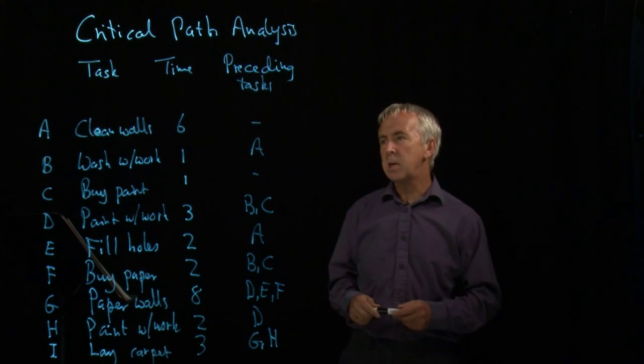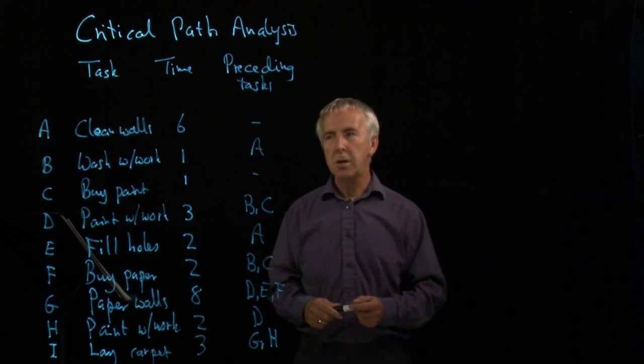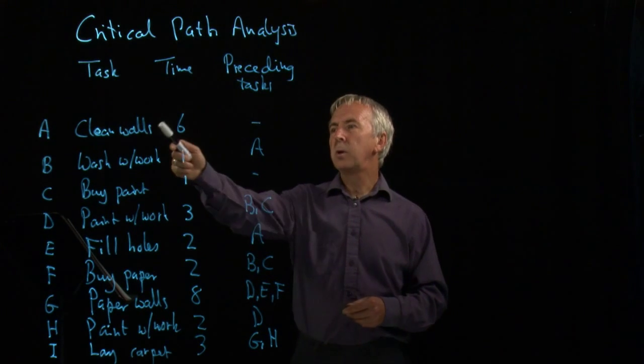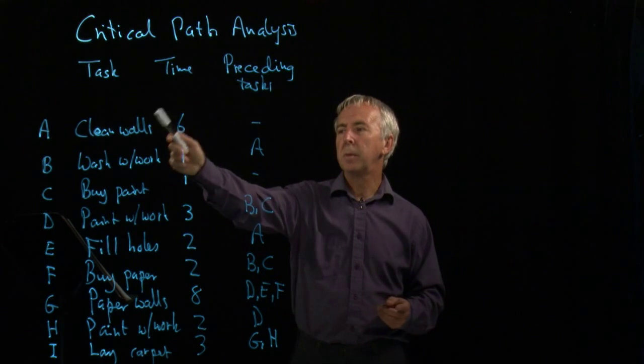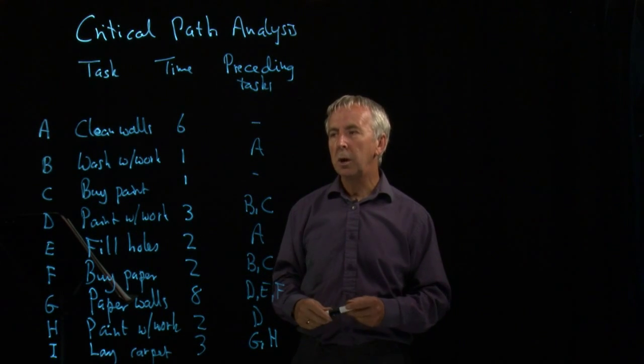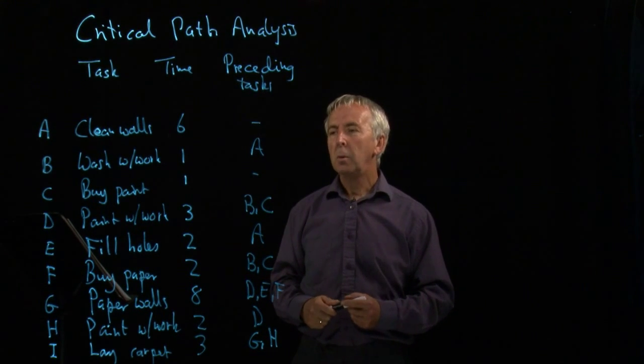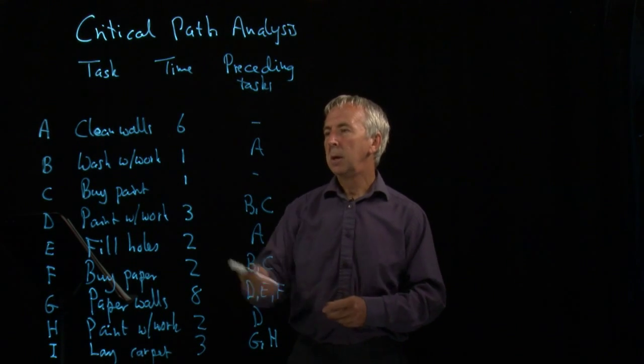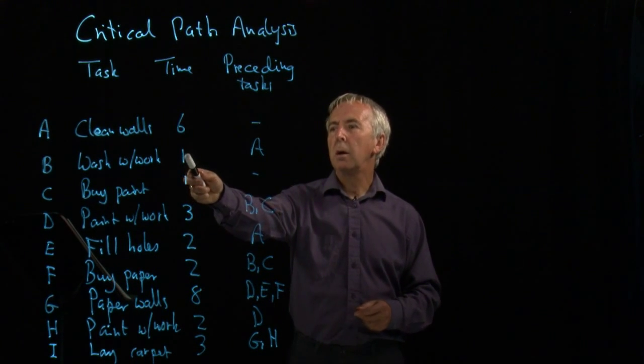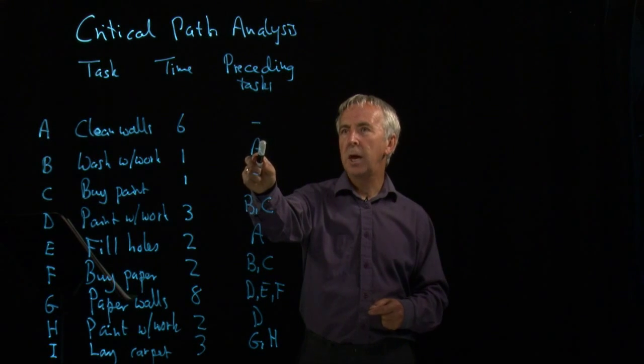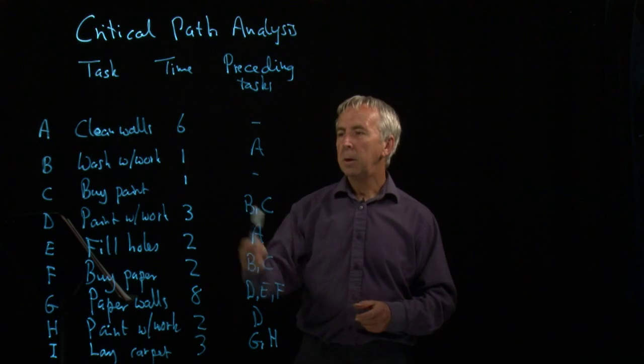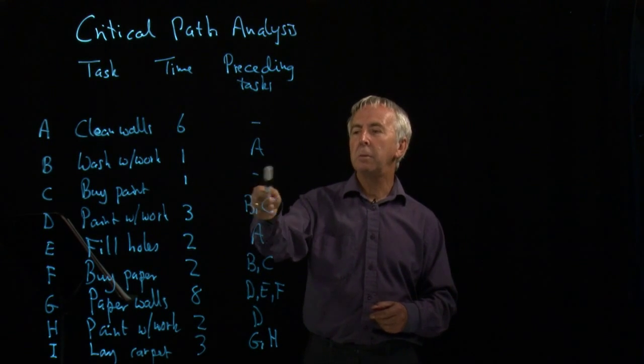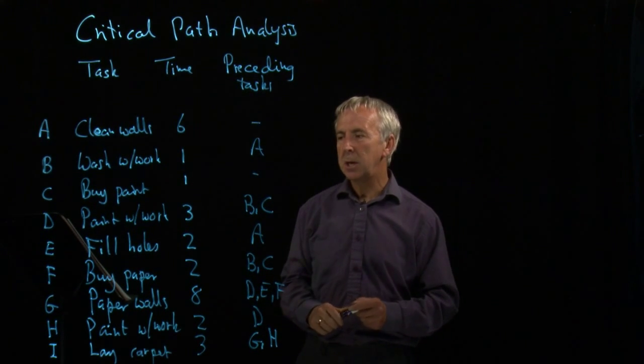We've got here nine tasks involved in decorating a room. We start by cleaning the walls, which takes six hours. We then have to wash the woodwork, which takes one hour. We have to buy the paint, which takes one hour. And washing the woodwork can't be done until we've cleaned the walls. So that needs the task A to precede it. You can buy the paint whenever you like, so we don't have to have any predecessors there.